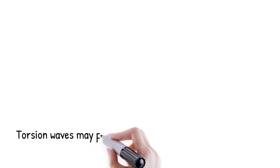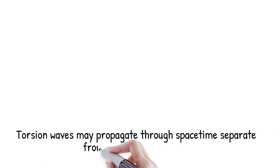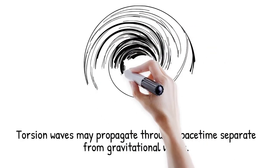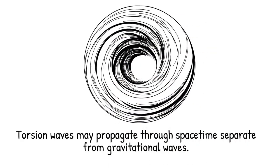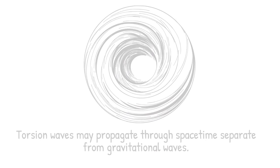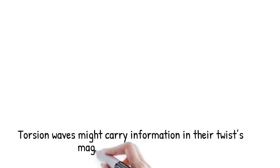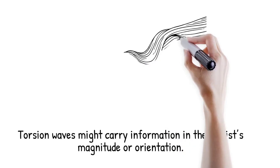The torsion field hypothesis suggests that dynamic torsional distortions, torsion waves, could propagate through space-time, separate from conventional gravitational waves, and could, in principle, carry information encoded in the twist's magnitude or orientation.